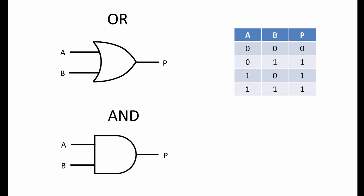This is an AND gate, and this is the truth table that describes its behavior. Any combination of inputs A and B results in a 0 at output P, except when both inputs are 1, in which case the output is 1.